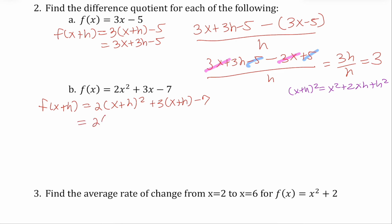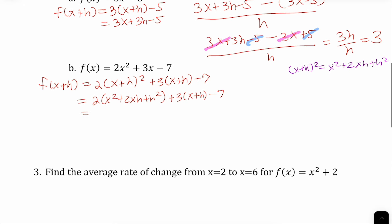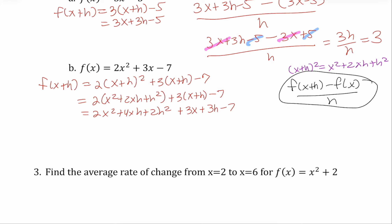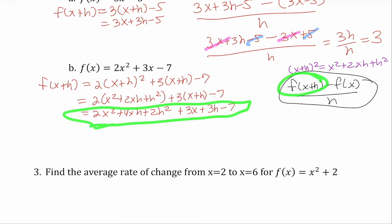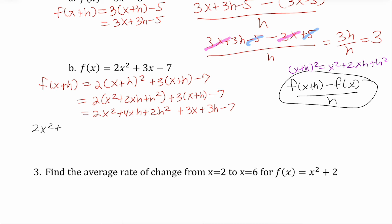Now let's put in what we know. So x plus h squared is x squared plus two x h plus h squared. Before doing any distribution, let's just fill that in. Now let's distribute all of this. We get two x squared plus four x h plus two h squared — just distribute the two — and then distribute the three to get three x plus three h minus seven. Now we're going to use the formula: f of x plus h minus f of x all over h. So it's two x squared plus four x h plus two h squared plus three x plus three h minus seven.